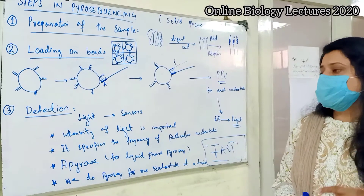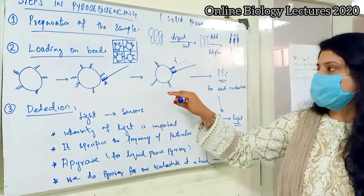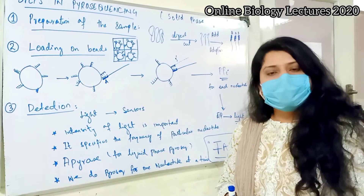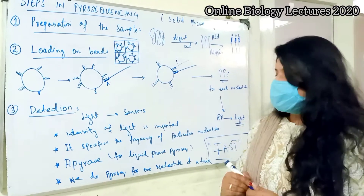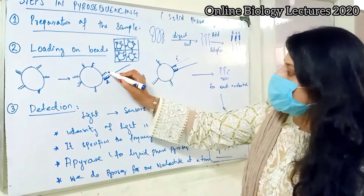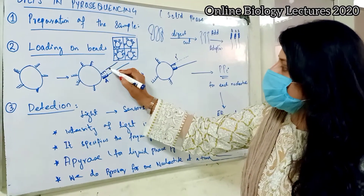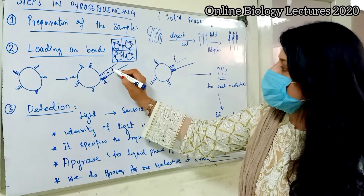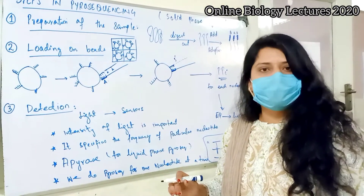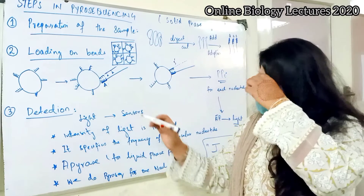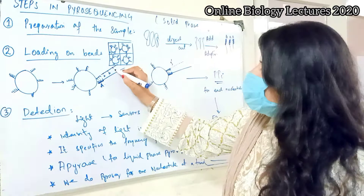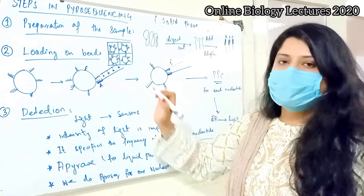For each reaction, we add one type of nucleotide at a time, starting with adenine. The number of adenines incorporated specifies the intensity of the light. If two adenines are added, the intensity of light will be lower, but if more adenines are added, the intensity of light will be higher. So the intensity of light is an important indicator.